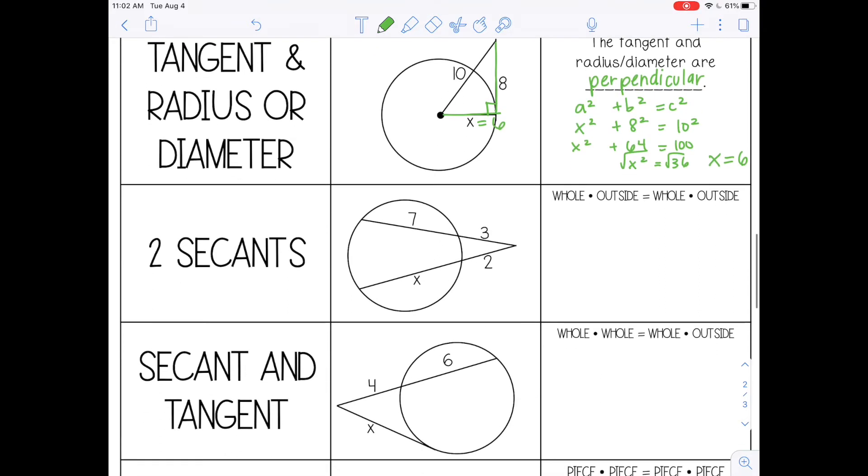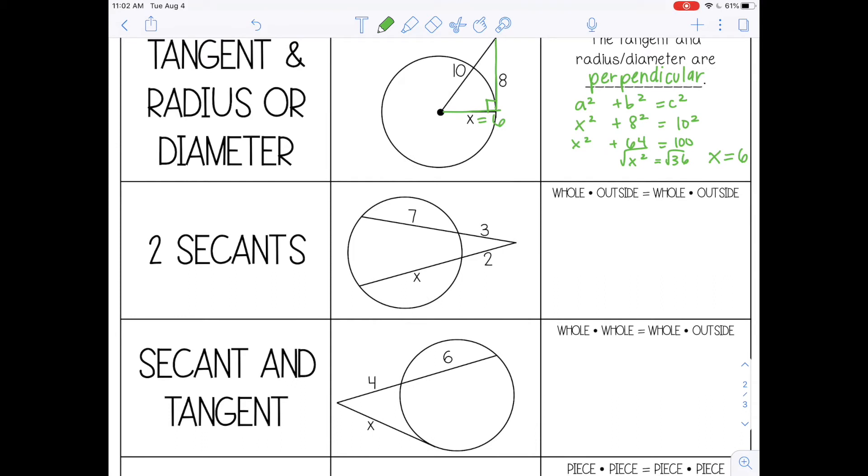All right, and the next one is 2 secants. So I have 2 secant segments, and if I want to find a piece of one of those, I can use the formula whole times outside equals whole times outside. And whole means the length of the whole segment. So I'm going to start with the top segment, and the length of this whole segment is 10. And outside means the piece that's outside the circle, so that would be 3. And then for the bottom, the length of the whole segment would be x plus 2, and then the outside piece is 2.